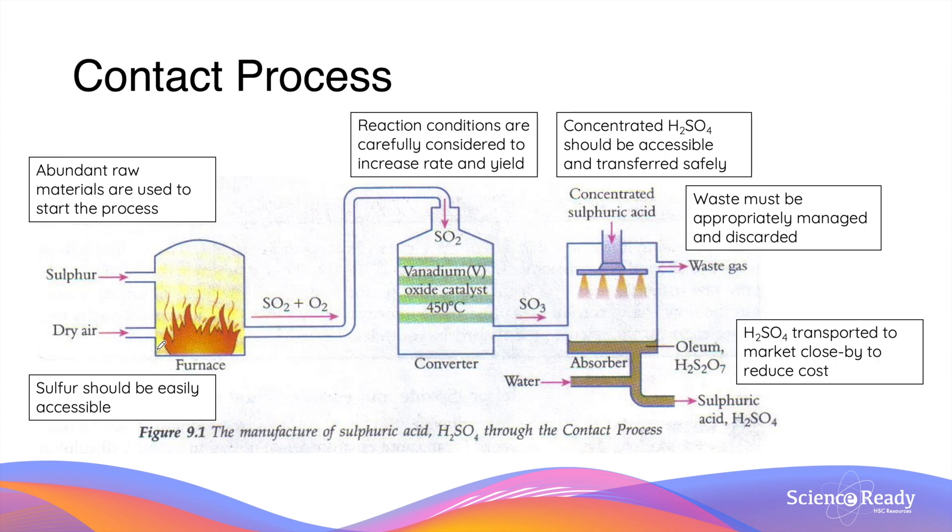In the very first reaction, which takes place in the furnace, the sulfur is heated and reacts with the oxygen that is supplied from surrounding air. In this particular step, it is important to make sure that the sulfur is readily accessible, as we need an abundant amount to mass-produce the sulfuric acid.